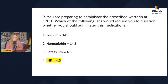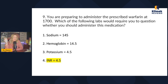Make sure you know these lab values — you have to know them. Normal sodium is 135 to 145. Hemoglobin is around 12 to 16. Potassium is 3.5 to 5 or 3.5 to 5.3, depending on your source. And INR is between two and three. If you don't know those lab values, you need to learn them — we're doing pharm right now but you have to know lab values too.